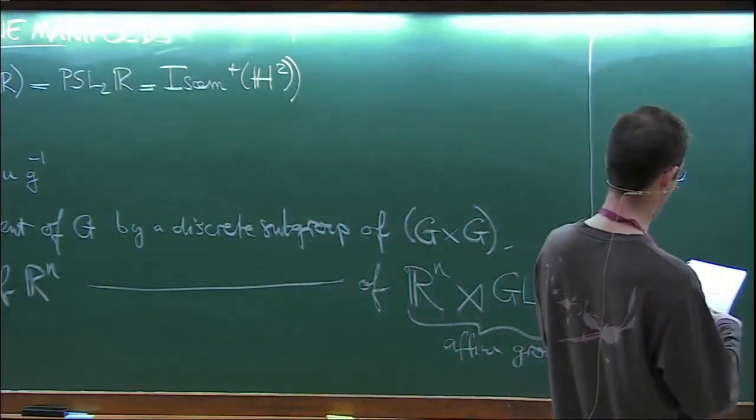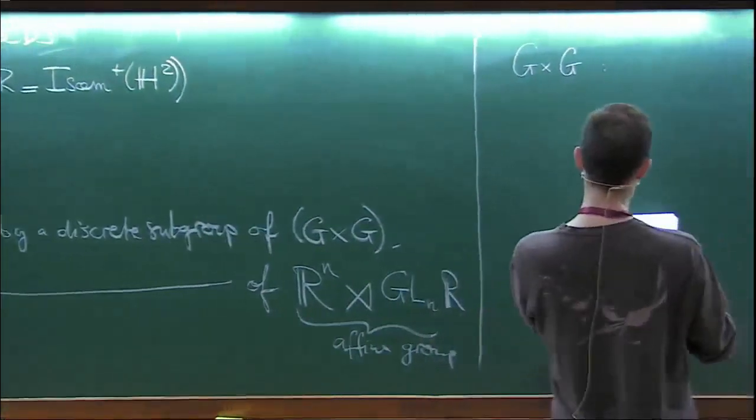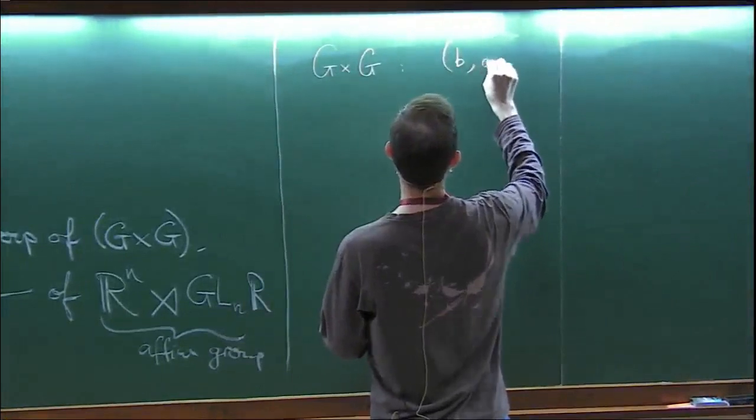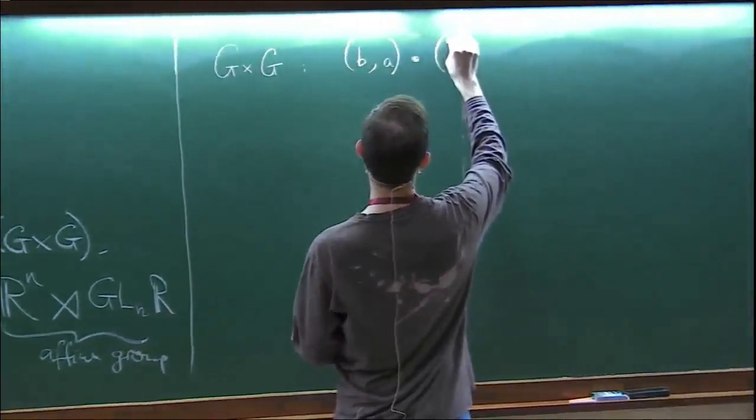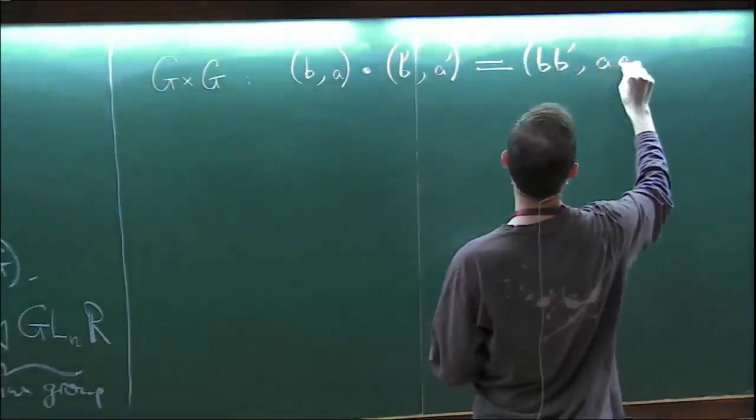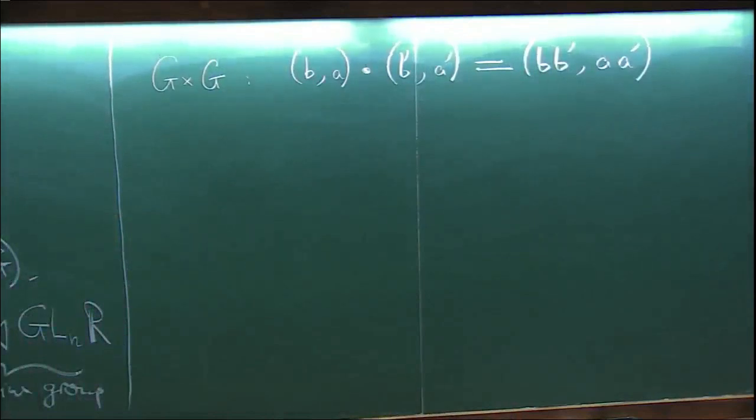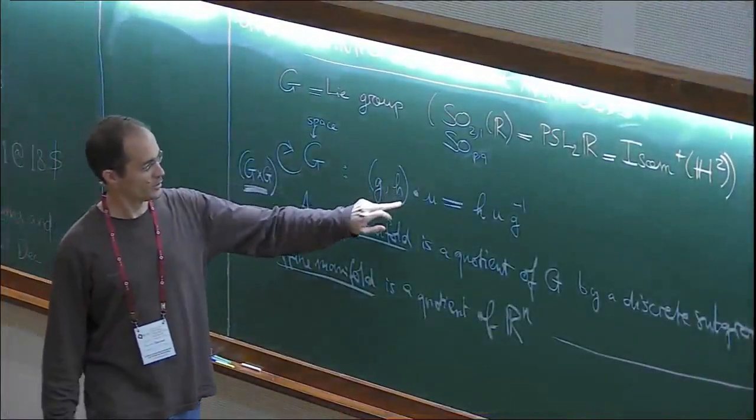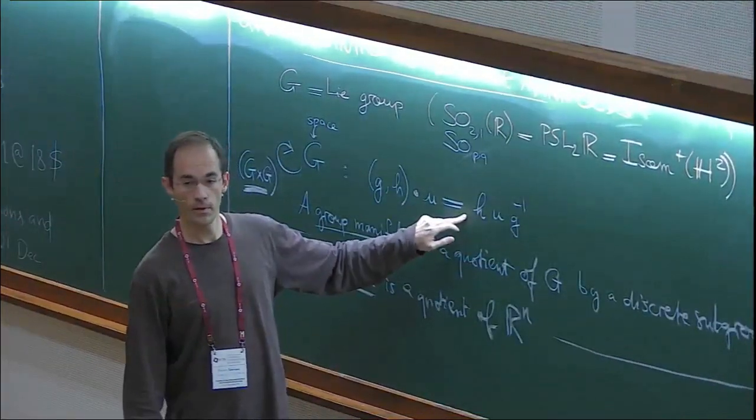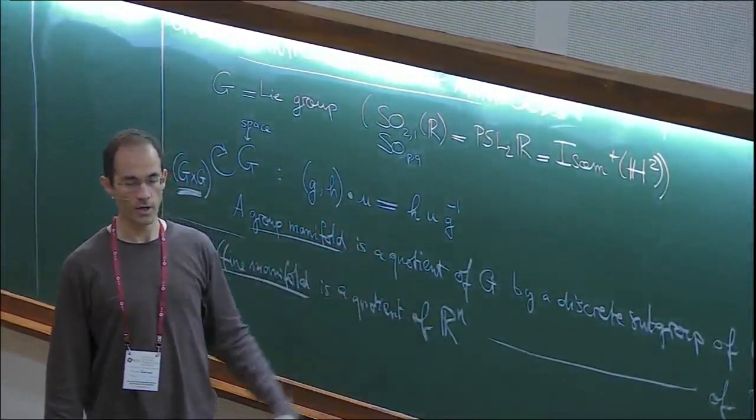To give you a sense of why these two things might be related, what I want to do is show how this Cartesian product G cross G is also secretly a semi-direct product related to the semi-direct product you have over here. Let's take an element in G cross G, and for some reason I want to write it (B, A). The group law is just that if I multiply it by (B', A'), it gives me (BB', AA').